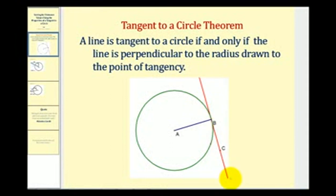So this is a tangent line where B is the point of tangency. Radius AB will be perpendicular to line BC. Let's go and take a look at our first example.